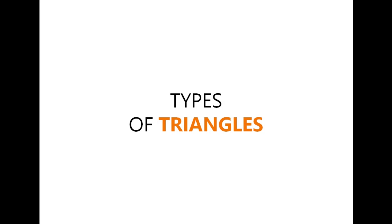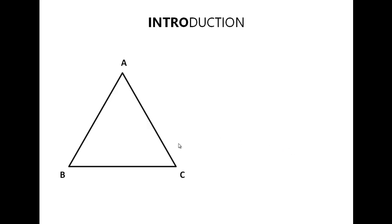Welcome to an episode from Mathverse. Today we'll be talking about different types of triangles. First, let's get a little bit of introduction to triangles. What I've got here is a triangle named A, B, and C, so we can call this triangle ABC.